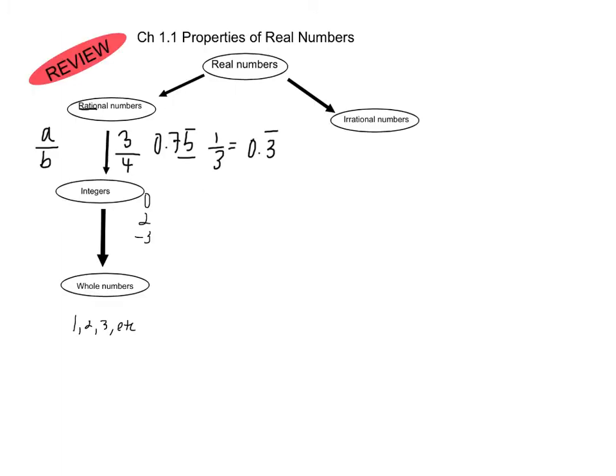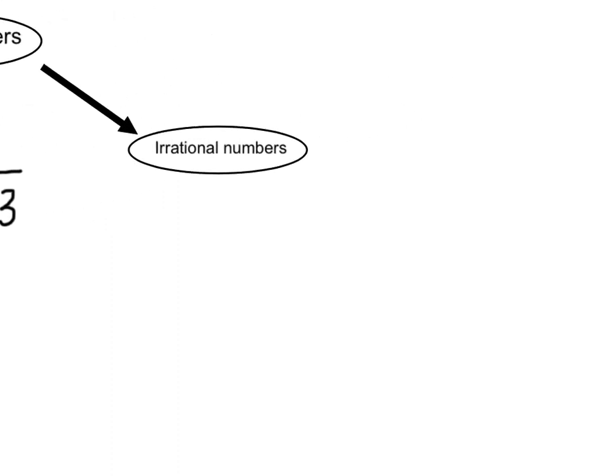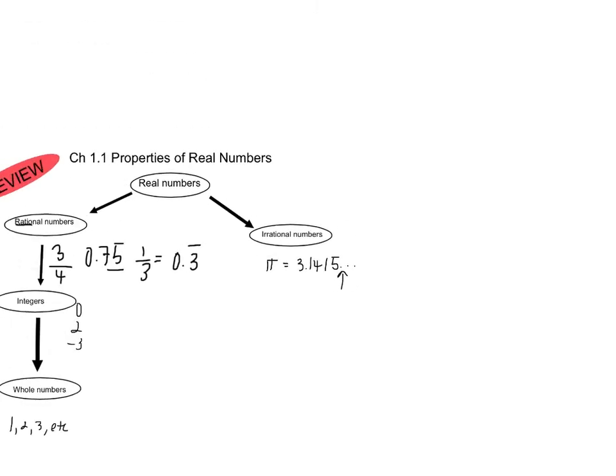The other subset of real numbers are irrational numbers. Those are those that cannot be written as quotients of integers or as decimals that terminate or repeat. An example would be pi, which is 3.1415 dot dot dot and does not terminate, so it is irrational.